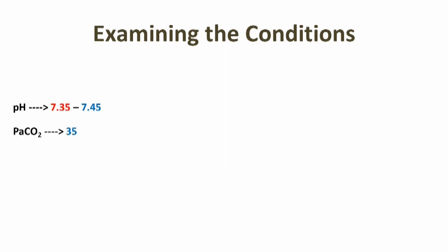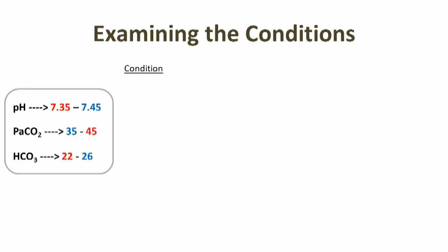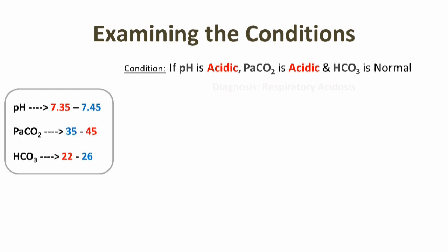We will refer to the normal values on the left-hand side. Condition number one: if pH is acidic, PaCO2 is acidic, and HCO3 is normal, then it indicates respiratory acidosis. Because PaCO2 is related to the lungs — lungs means respiration — and pH is acidic, therefore it's respiratory acidosis.